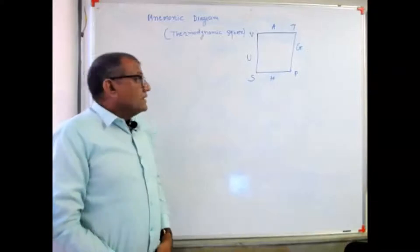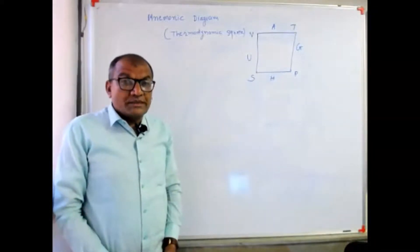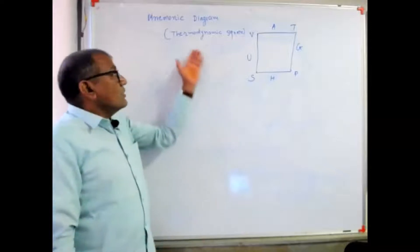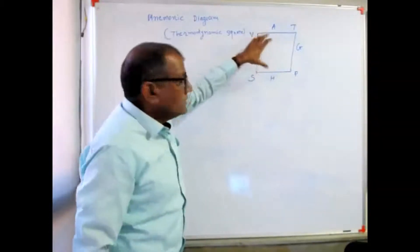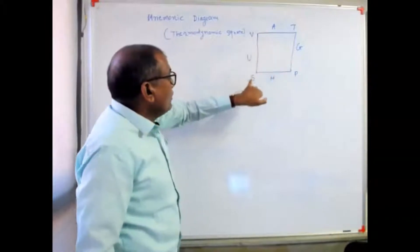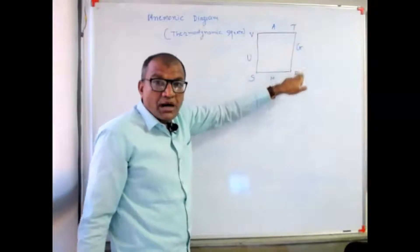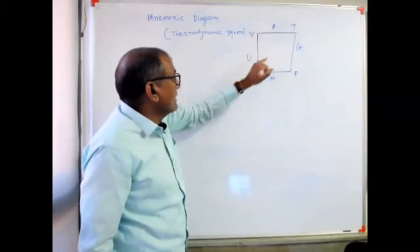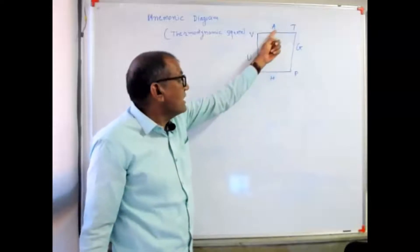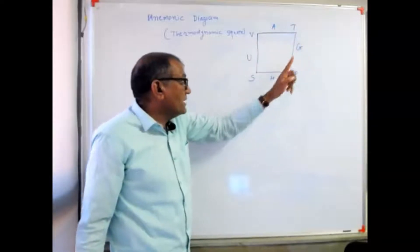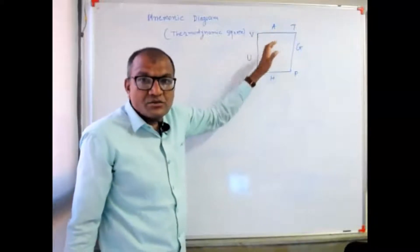Hi everyone. In this video, we are going to discuss the mnemonic diagram that is also known as the thermodynamic square. I have shown here a diagram. All four canonical variables are represented by the four corners of the square, and all four properties — internal energy, Helmholtz free energy, Gibbs free energy, and enthalpy — are represented as the sides of this square.